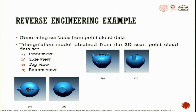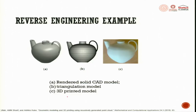Using a triangulation model, we have obtained a 3D scan point cloud data set with a front view, side view, and top view, and the model is ready. This model needs to be converted to STL format. We have the rendered solid CAD model and can now see how it looks as a triangulation model and when 3D printed. This is one of the examples to understand reverse engineering more.